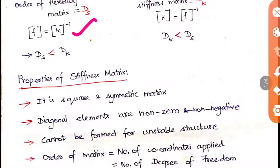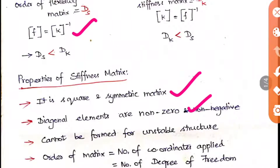The properties of the stiffness matrix are: it is always a square and symmetric matrix, the diagonal elements will be nonzero, it cannot be formed for unstable structures, and the order of the matrix equals the number of coordinates, that is the degree of kinematic indeterminacy, also called the degree of freedom.